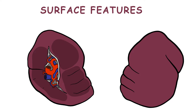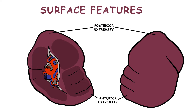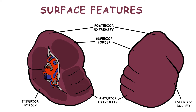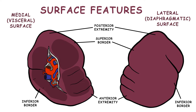Let's examine some surface features of the spleen. On opposite ends of the spleen, we have the anterior and posterior extremities. On either side we see the superior and inferior borders. Here we have the lateral or diaphragmatic surface, which is the convex surface which fits into the concavity of the left hemidiaphragm. And here we have the medial or visceral surface.